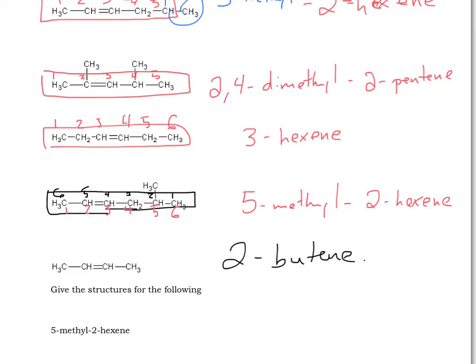So here are the answers for the next four examples. 2,4-dimethyl-2-pentene. Remember again that the dimethyl part gets two numbers, one for each methyl group, and we're numbering this so that the double bond gets the lowest combo of numbers, so 2, 3 as opposed to 3, 4. 3-hexene, 5-methyl-2-hexene, which is basically the exact same as the example two above, and then 2-butene.